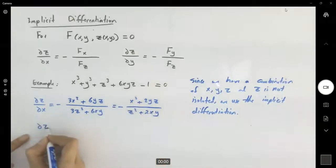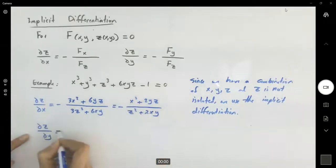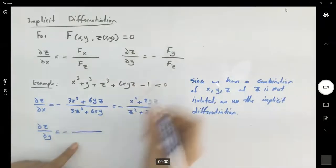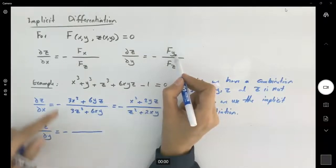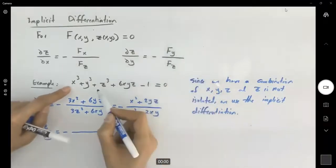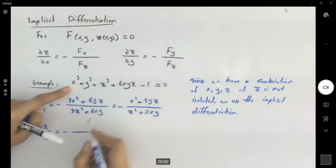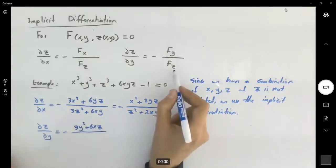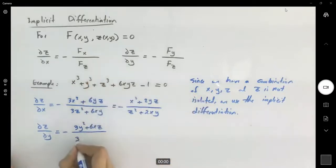Now partial derivative of z with respect to y. Let's follow the formula. The negative sign in front of it. Then on the numerator, you have the partial derivative of f with respect to y. So with respect to y, it means that x and z are constant. So we're left with 3y squared plus 6xz divided by, the denominators are going to be the same, 3z squared plus 6xy.